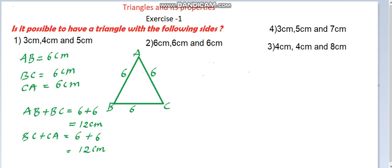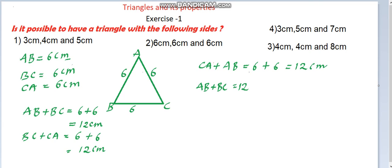Finally, CA plus AB equals six plus six equals twelve centimeters. Now we compare each sum against the respective third side. AB plus BC is twelve centimeters; BC and CA are both six centimeters. We are comparing to verify that each sum of twelve is greater than the remaining side of six.